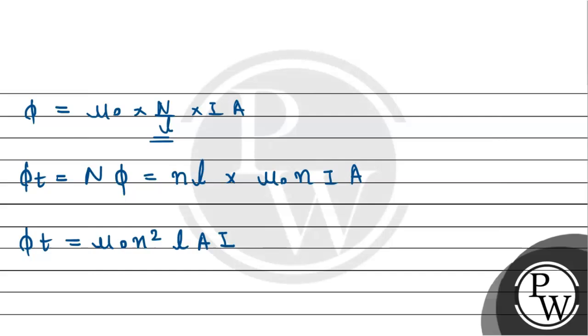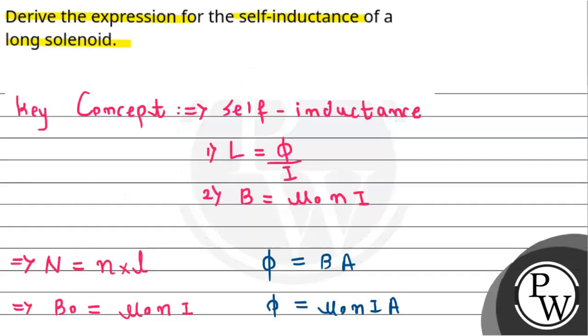By using the formula of the self-inductance of solenoid, L equals Phi by I. The self-inductance L will equal the total flux to the solenoid divided by the current. I'm simply substituting the total flux value.